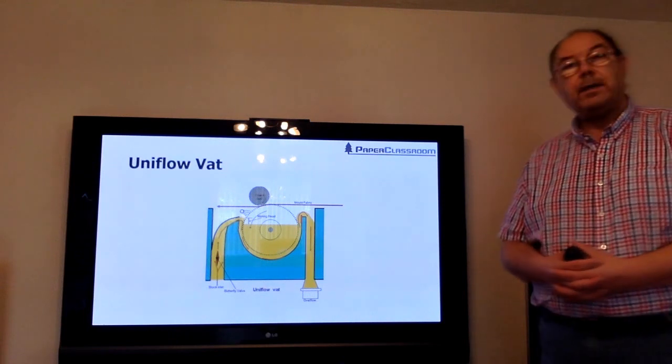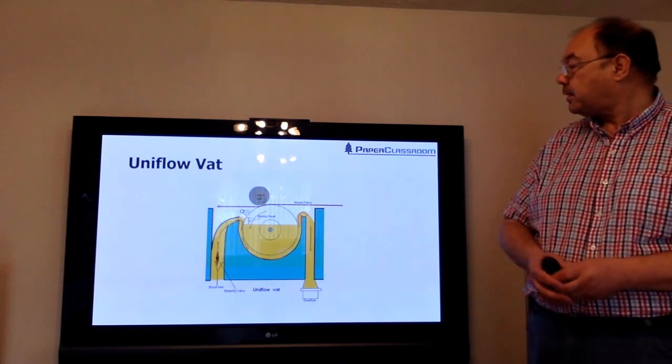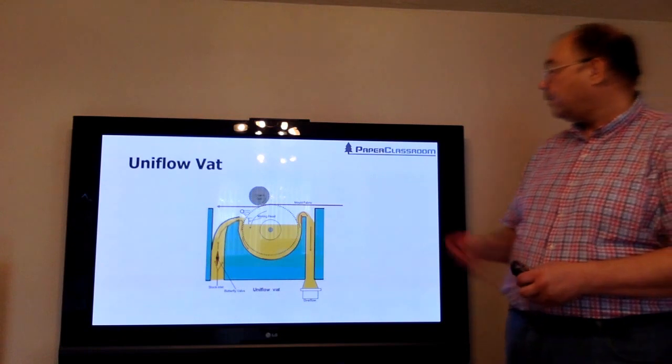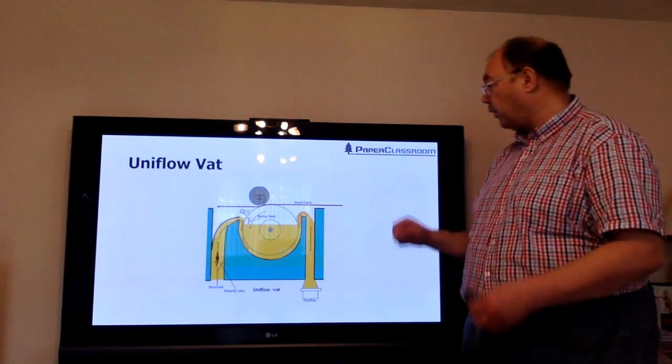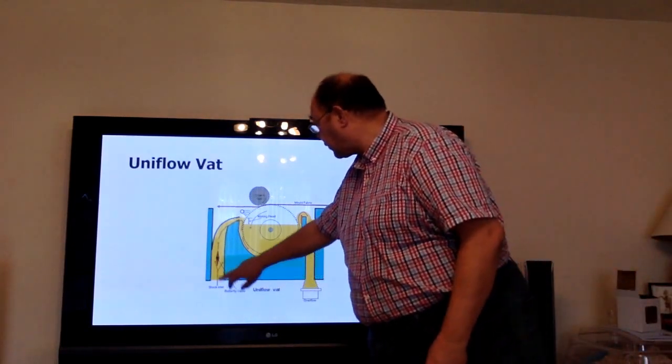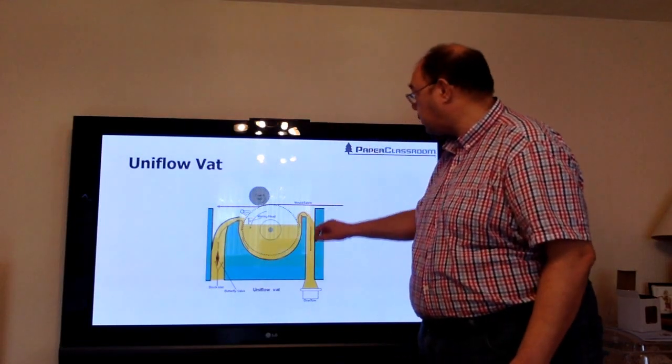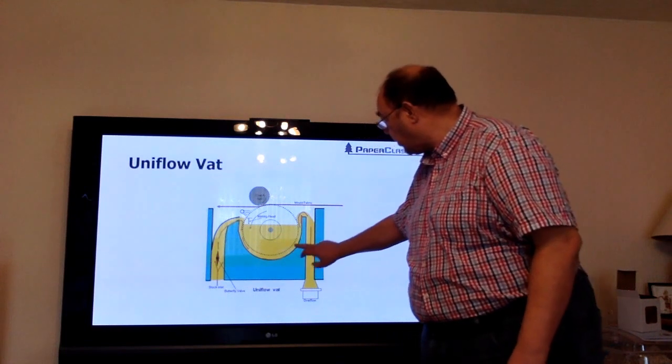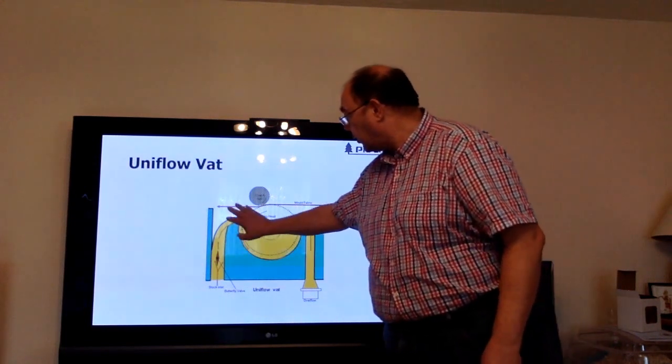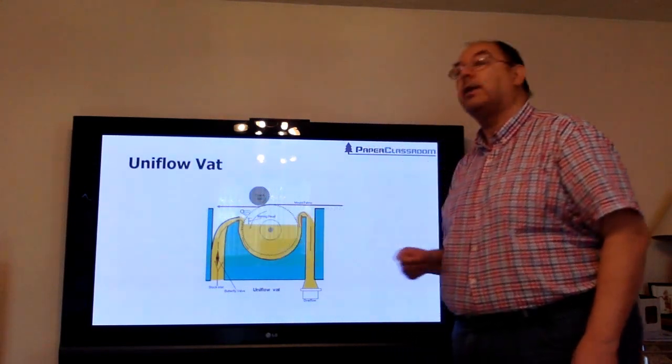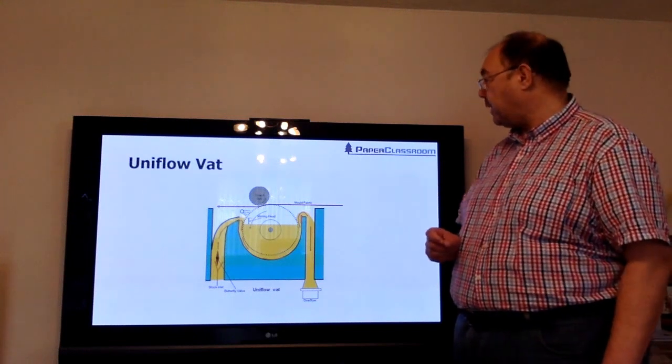This here is the uniflow vat. It's called the uniflow vat because everything goes in one direction. Here we have the stock coming in going around the vat circle here coming out this way and the making circle is turning in the same direction. So the stock and the making circle are both turning in the same direction.